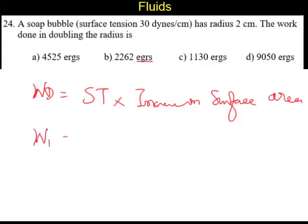For the first case, when the bubble is of radius R, we can say surface tension T. A soap bubble will have two surfaces, so 2 times, because it is a sphere, we can say it is 4πR².